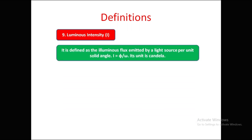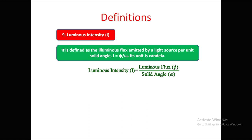The next definition is luminous intensity, capital I. It is defined as the luminous flux emitted by a light source per unit solid angle. So I = phi / omega. Its unit is candela.